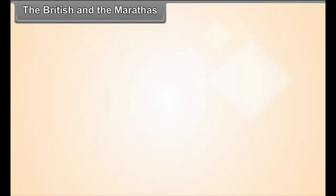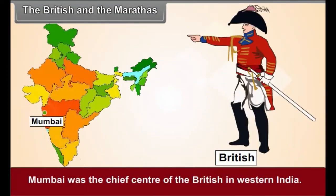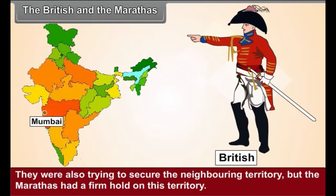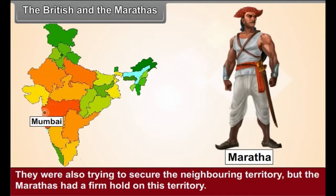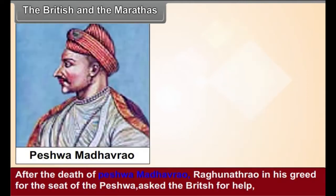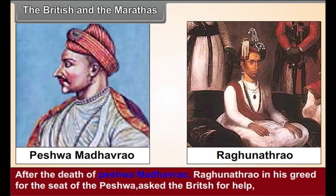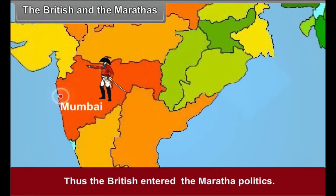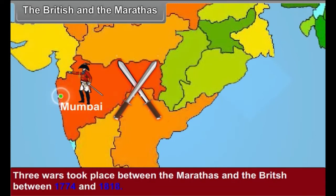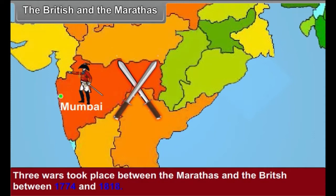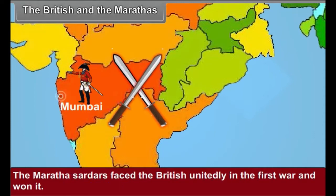The British and the Marathas. Mumbai was the chief centre of the British in western India. They were also trying to secure the neighbouring territory, but the Marathas had a firm hold on this territory. After the death of Peshwa Madhav Rao, Raghunath Rao, in his greed for the seat of the Peshwa, asked the British for help. Thus, the British entered the Maratha politics. Three wars took place between the Marathas and the British between 1774 and 1818. The Maratha Sardas faced the British unitedly in the First War and won it. The First Anglo-Maratha War ended with the Treaty of Salbai in 1782.